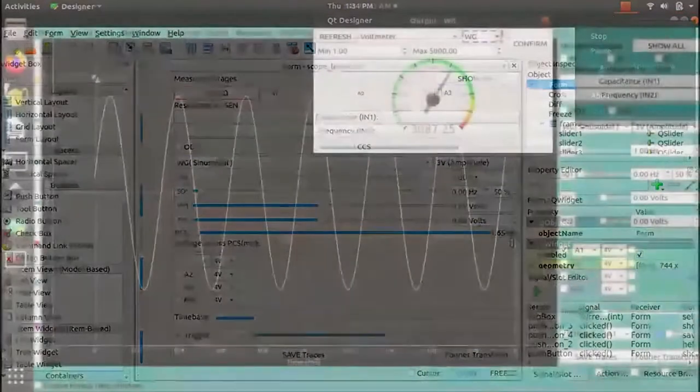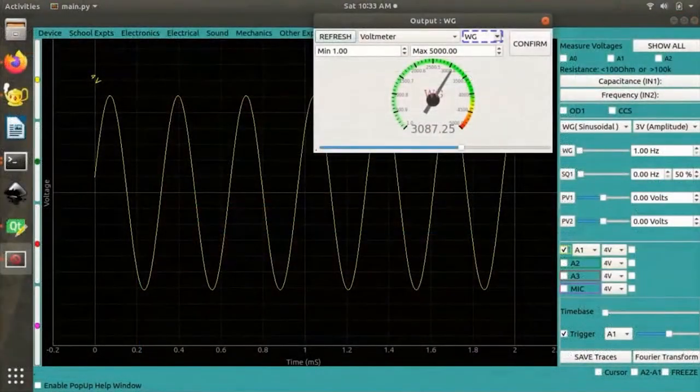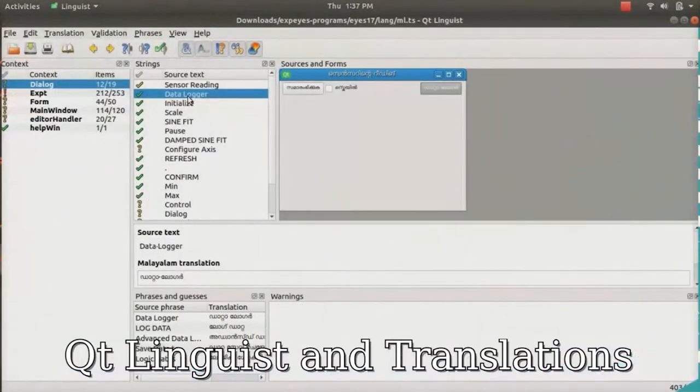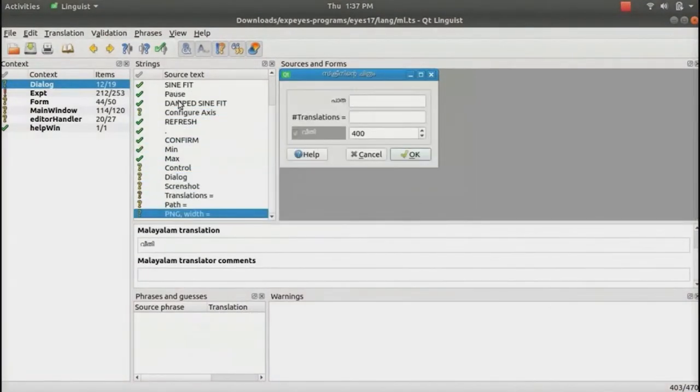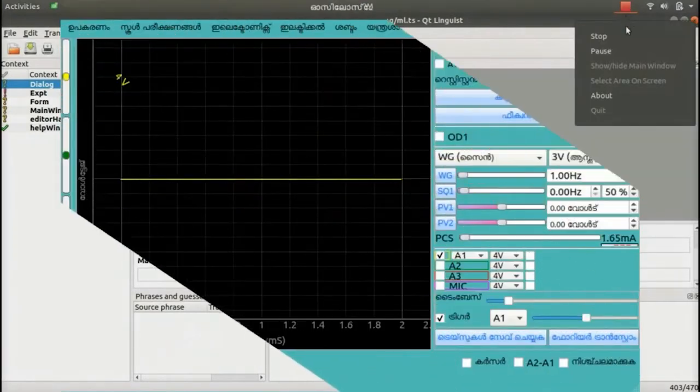Here's the final oscilloscope user interface. This is also translatable via Qt Linguist which follows a phrase-by-phrase approach, and here you can see the UI translated into Malayalam.